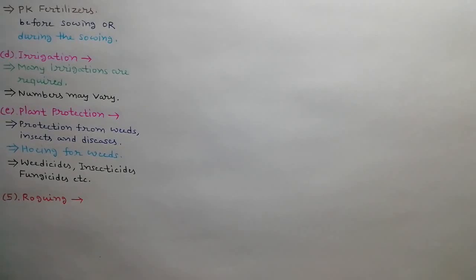5th step is Rogging. Time to time removal of off type plants is required such as other crop plants, weeds and diseased plants. This is done to avoid contamination by undesired pollination and secondary infection. To avoid the contamination, undesired plants must be uprooted and enclosed into plastic bags and burn or buried into soil away from the seed field.